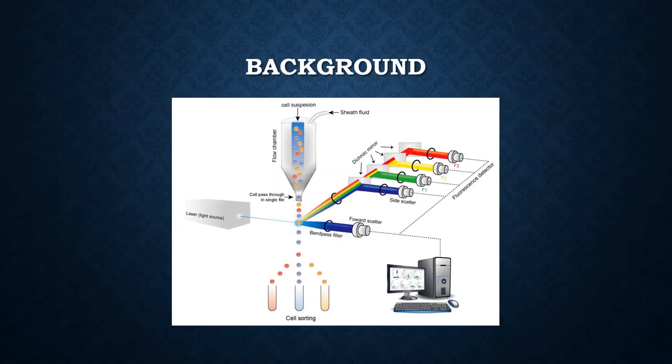So, how does it work? We have the sample placed in the machine. Then the machine takes the sample in and mixes it with sheath fluid. And then the sheath fluid will be guided through a small channel which forms the particles in a line. Then the particles will pass through a laser beam which will be detected by a laser detector.